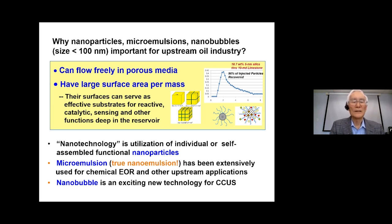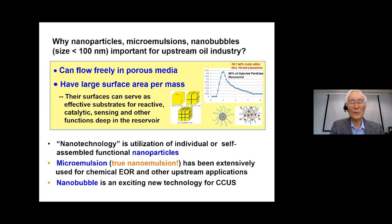Nanotechnology is the utilization of individual or assembled functional nanoparticles. I'll talk briefly about nanotechnology in general. Microemulsion — actually truly nanoemulsion — has been extensively used for chemical EOR and other upstream applications, and UT Austin is a world-leading authority in this area. Nanobubbles are an exciting new technology for CCUS, which I'll briefly discuss in the latter part of this seminar.